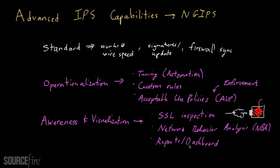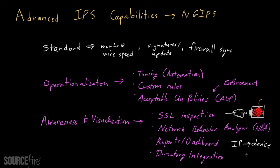Another aspect of awareness and visualization involves directory integration. Typically, a network device has awareness about the network in terms of IP addresses, but in reality, if you want to make use of those insights, whatever IP address you find on the network has to be mapped back to a device, which in turn maps to an actual user — an actual human being. To put good policies into effect, you have to think at the user level, not just the IP level.